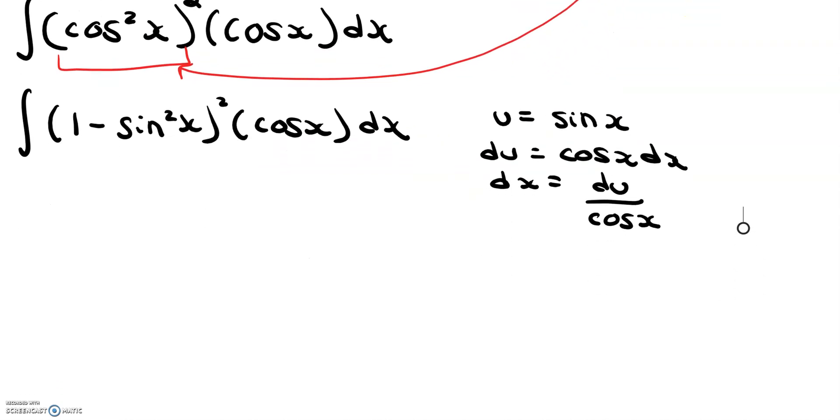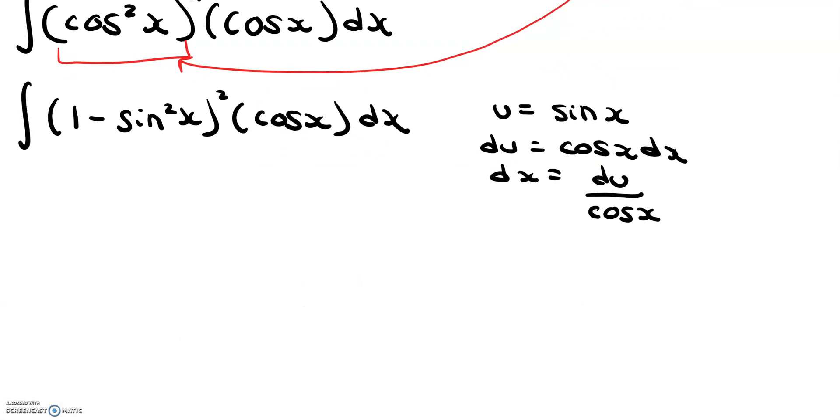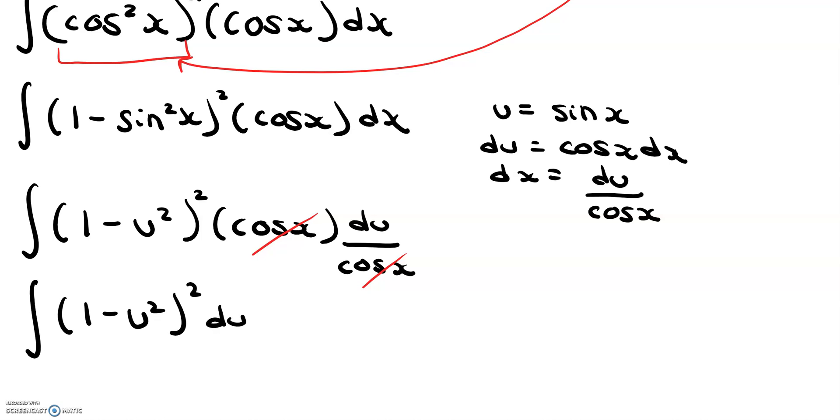So now if we substitute this all in our integral, we get 1 minus u squared, and all of that is squared, times cosine x du divided by cosine x. Now we see that these two cosine x values, they cancel. So then we have 1 minus u squared, squared, du.